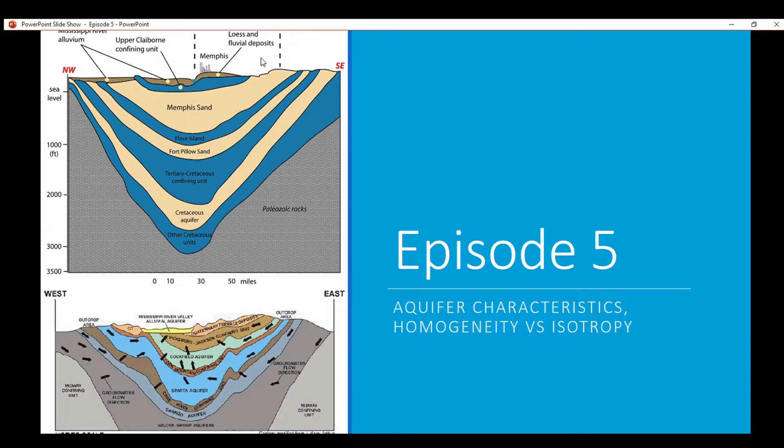The Memphis sand is probably a pretty good aquifer and it recharges on these two sides of the aquifer. You have Fort Pillow sand, it's probably similar to the Memphis sand so it recharges on each side of the syncline. Then this is a confining unit and then you have a Cretaceous aquifer which is very deep at 2,000 feet if not deeper at its deepest extent. And then at 3,000 feet you have other Cretaceous units and then Paleozoic rocks.